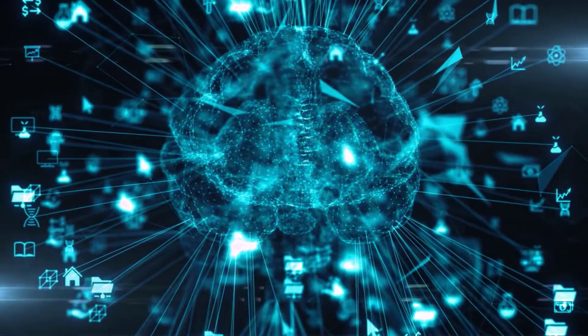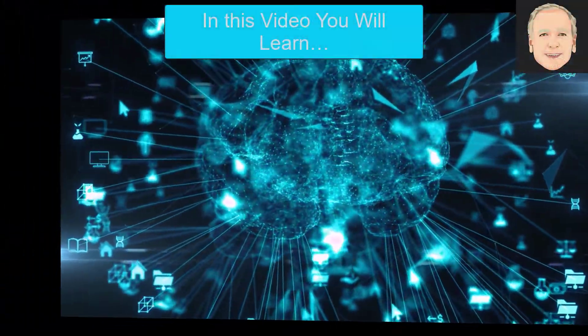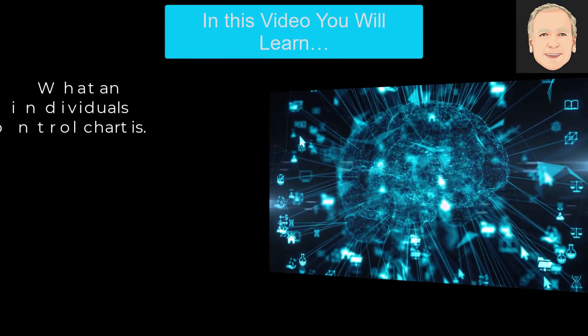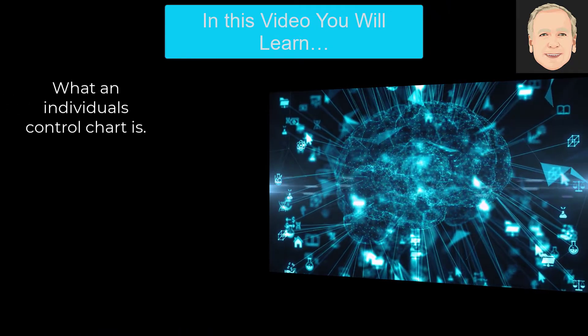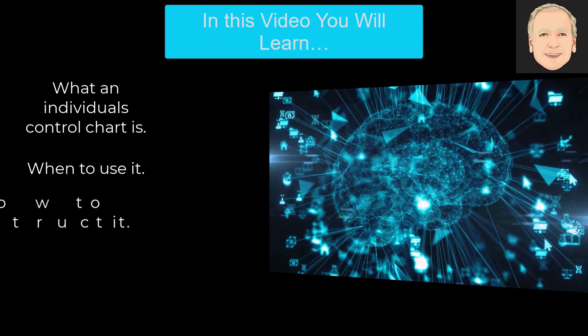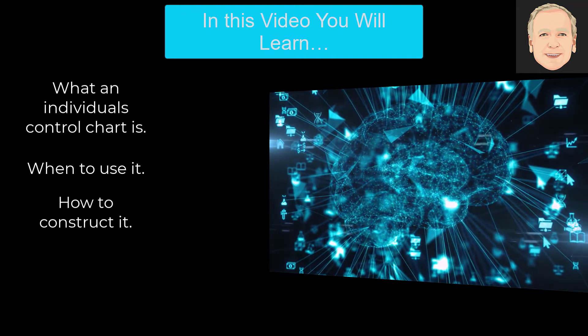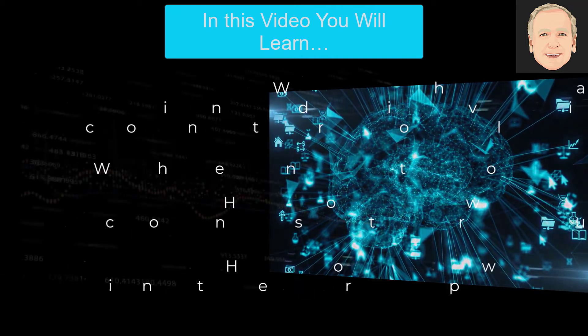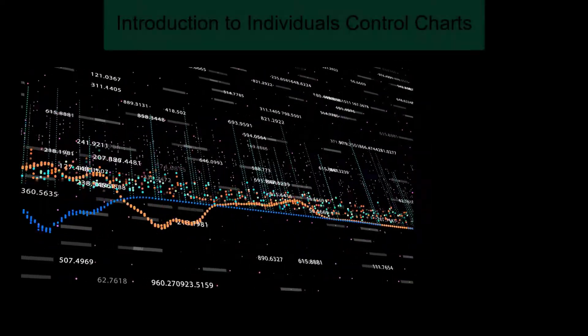So what we're going to do in this video is give you a brief overview of individual control charts. We're going to take a look at what an individual control chart is. You'll see it's two charts, the individuals with a moving range chart, when to use it, we've talked about it already, limited data, how to construct it, we're going to look at the equations of course, but also how software can be used, and then how to interpret the individuals control chart.